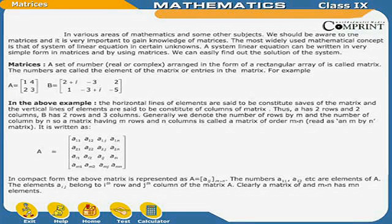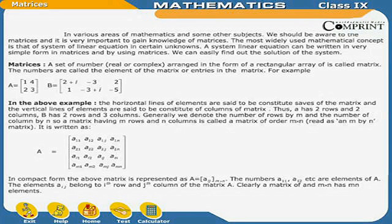For example, matrix A contains elements 1, 4, 2, 3. Whereas matrix B contains elements 2 plus iota, minus 3, 2, 1, minus 3 plus iota, minus 5. In the above example, the horizontal lines of elements are said to constitute rows of the matrix, and the vertical lines of elements are said to constitute columns of the matrix.